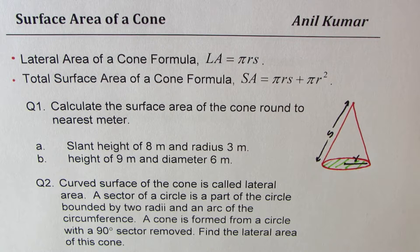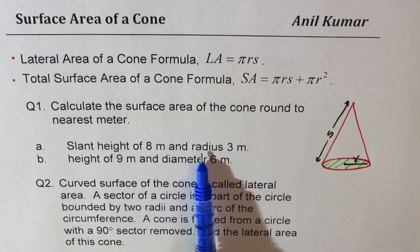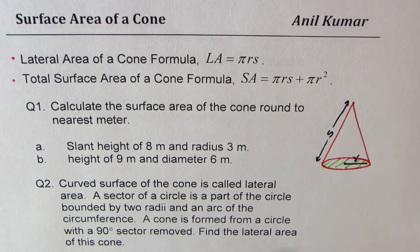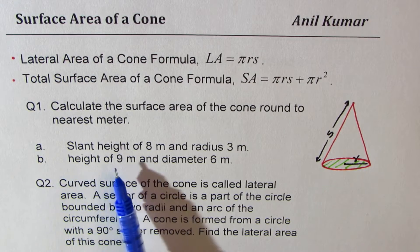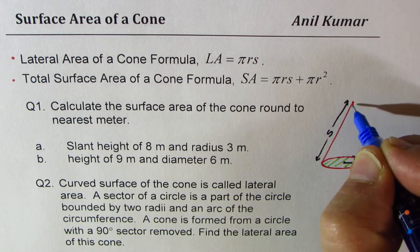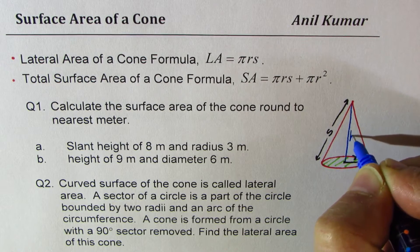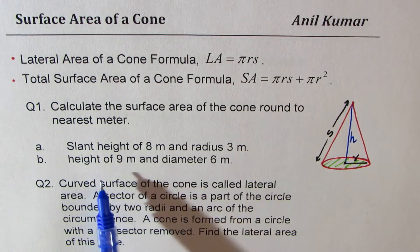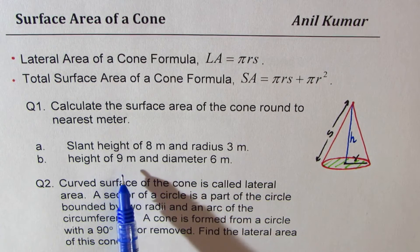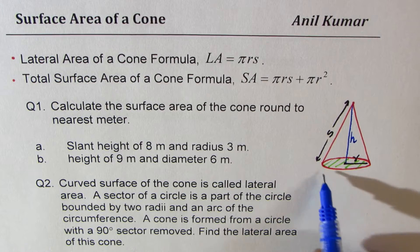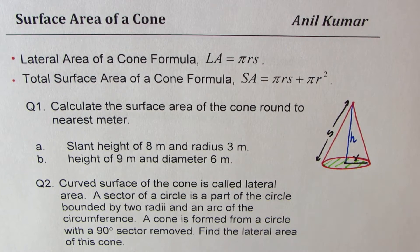Based on this we have two questions. Question one: calculate the surface area of the cone, rounded to the nearest meter, where slant height is 8 meters and radius is 3. For the second part, we are given the height of 9 meters and diameter of 6 meters.